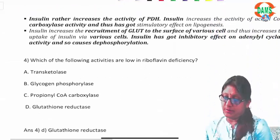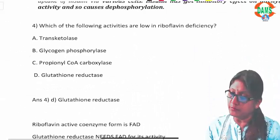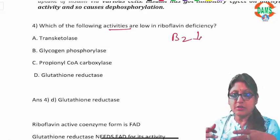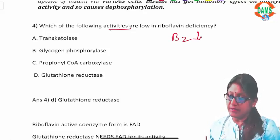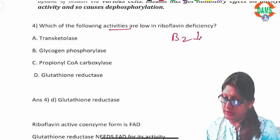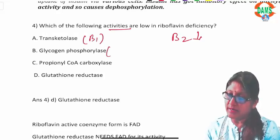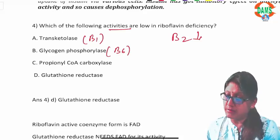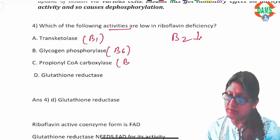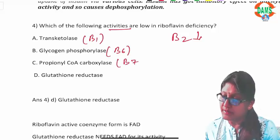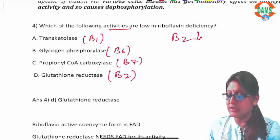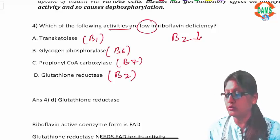The next question asks which enzyme activity is low in riboflavin (B2) deficiency. Transketolase needs B1, glycogen phosphorylase needs B6, and propionyl-CoA carboxylase needs B7 (biotin) since all carboxylases need biotin. Glutathione reductase is the enzyme that needs B2, so in low B2, glutathione reductase activity will be adversely affected.